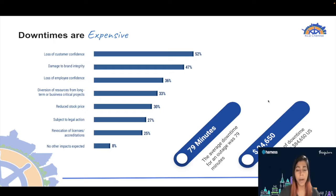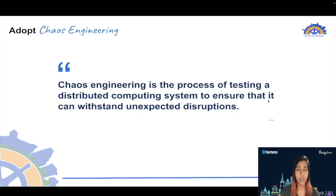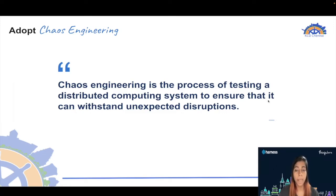One way to avoid downtimes is by adopting the practice of chaos engineering. Chaos engineering is the process of testing a distributed computing system by injecting faults intentionally. The goal is to identify weaknesses in the application through controlled experiments, to check whether it can withstand unexpected situations or not.